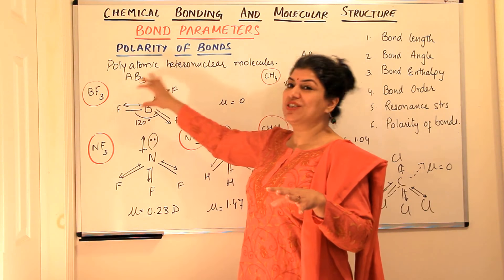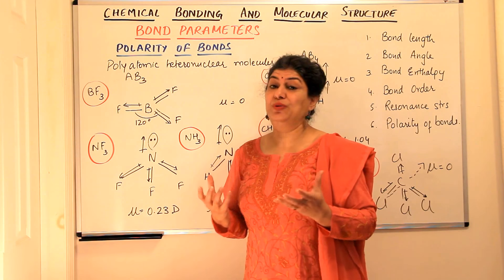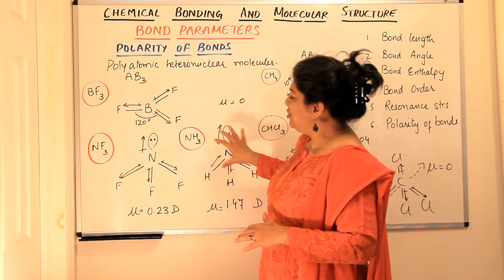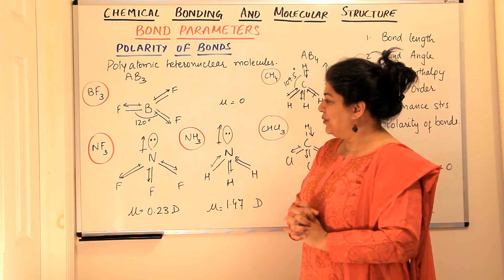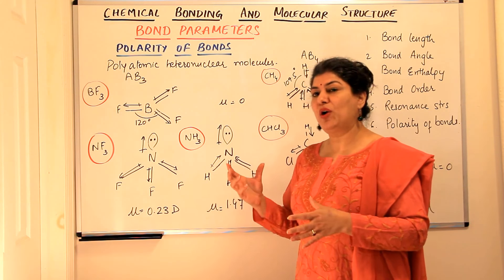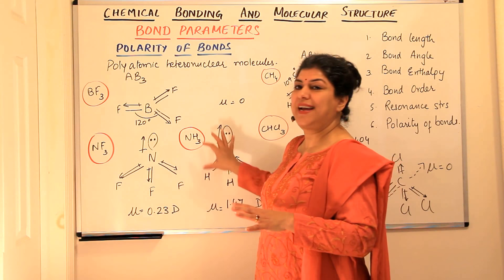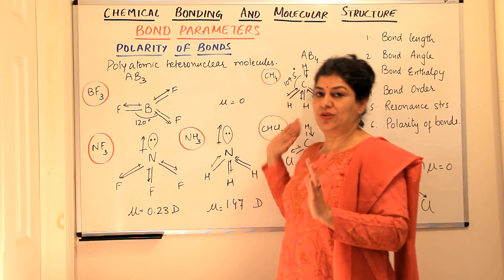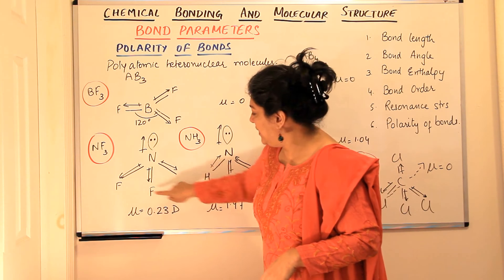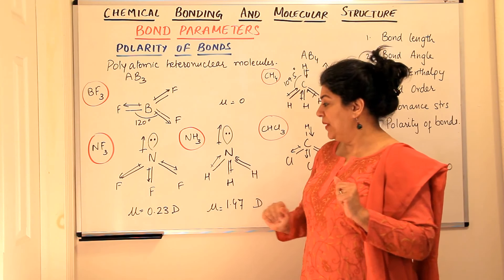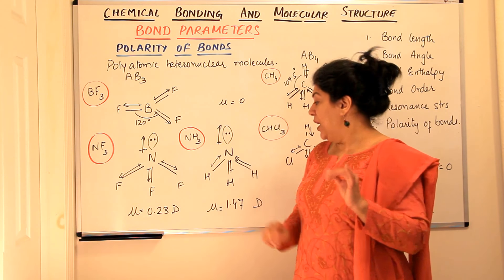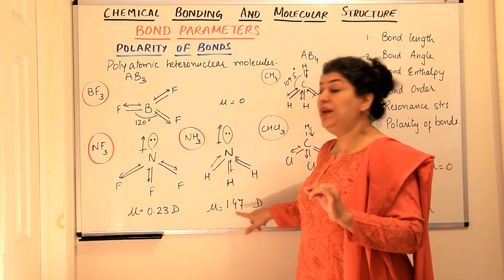Isn't this interesting? Just because of the structure, although the molecule should have shown polarity, it shows zero dipole moment — it's a non-polar molecule. The next two examples are also very interesting. Both NF3 and NH3 have a similar structure, yet we notice that the net dipole moment of NF3 is only 0.23 Debye, while the net dipole moment of ammonia is 1.47 Debye — a large dipole moment.